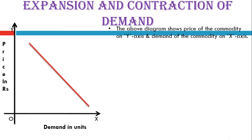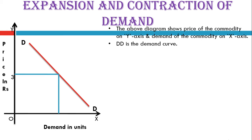There will be one more line, downward sloping from left to right — this is known as the demand curve DD, falling towards the X-axis from left to right. Two lines of a different color will represent the equilibrium point where price is 3 and demand is 3. Name that point E. At point E, the initial price is rupees 3 and the initial demand is 3 units.